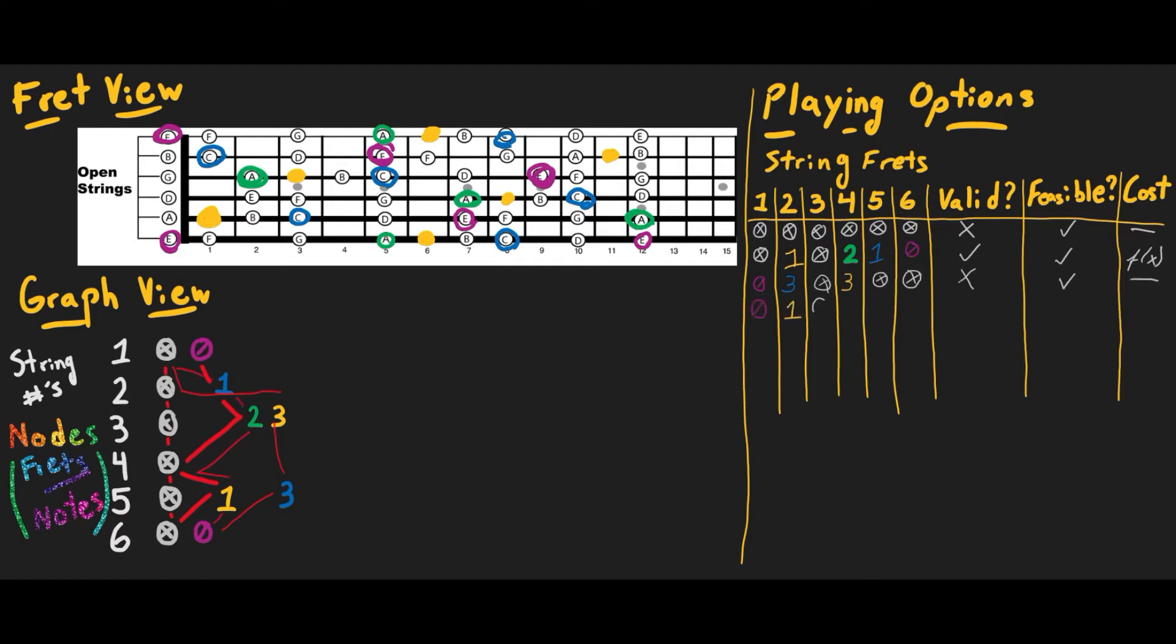I used a graph algorithm to search for the least cost path through this structure to identify the best options for fretting schemes, where the cost function is based on ergonomic difficulty after physically infeasible options are removed.